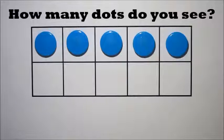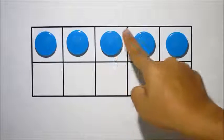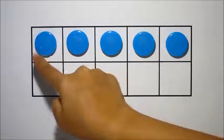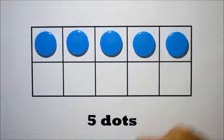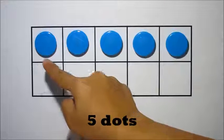How many dots do you see? 1, 2, 3, 4, 5. There are 5 dots. When the top row is fully filled, there are 5 dots.